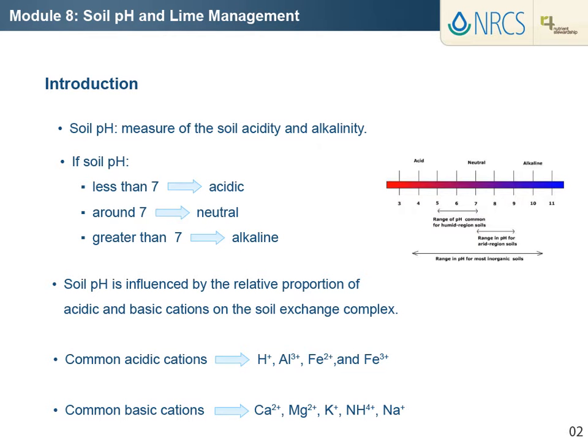Soil pH is a measure of the soil solution's acidity and alkalinity. By definition, pH is the negative logarithm of the hydrogen ion concentration. Soils are referred to as being acidic, neutral, or alkaline depending on their pH values on a scale from 0 to 14. A pH of 7 is neutral, less than 7 is acidic, and greater than 7 is alkaline.